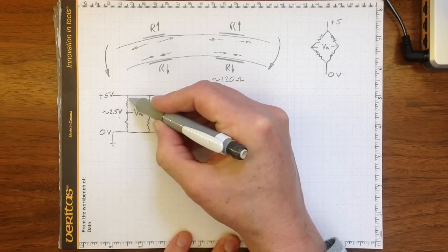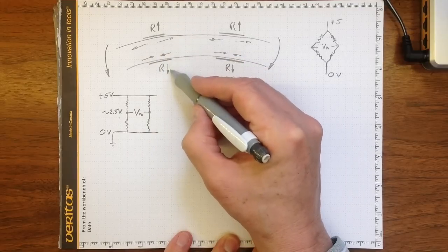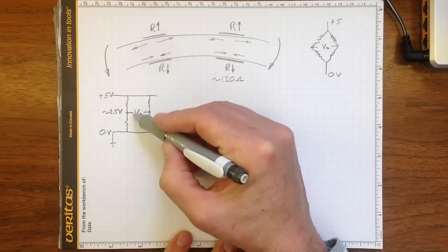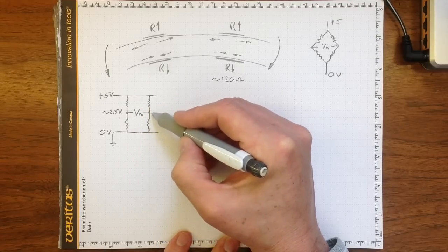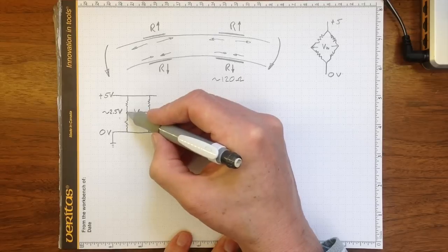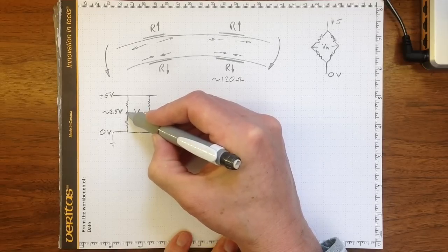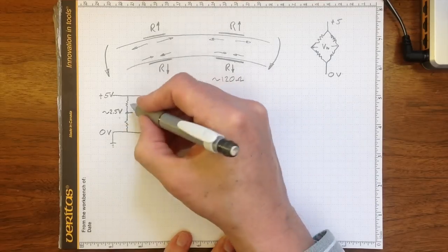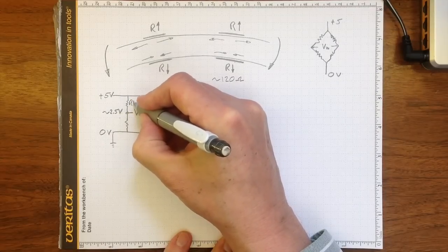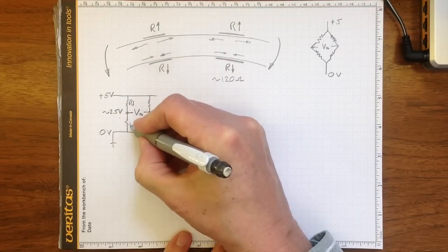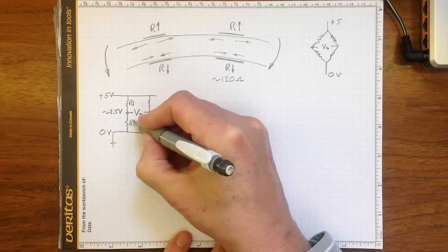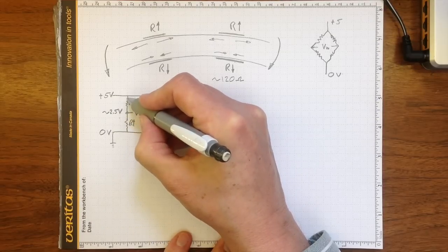But if some of these resistors have gone up a little bit and some have gone down a little bit, then that will shift the balance of this bridge. So if we'd like to make this one have a higher voltage, then we need to have this be one of the resistances that goes down and that be one of the resistances that goes up. That'll make that voltage higher.